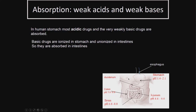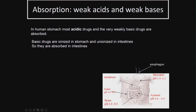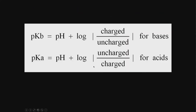Basic drugs are ionized in the stomach and ionized in the intestine, so they are absorbed in the intestine. You need to design depending upon where you want the drug to get absorbed — especially if it is quick acting, you want it absorbed early; slow acting, you want it absorbed further down. We introduced equations for pKa and pKb related to pH, and the log of charged versus uncharged. Charged molecules are highly polar and will not cross the membrane barrier; ideally the drug should be in the uncharged form to cross the lipid membrane.